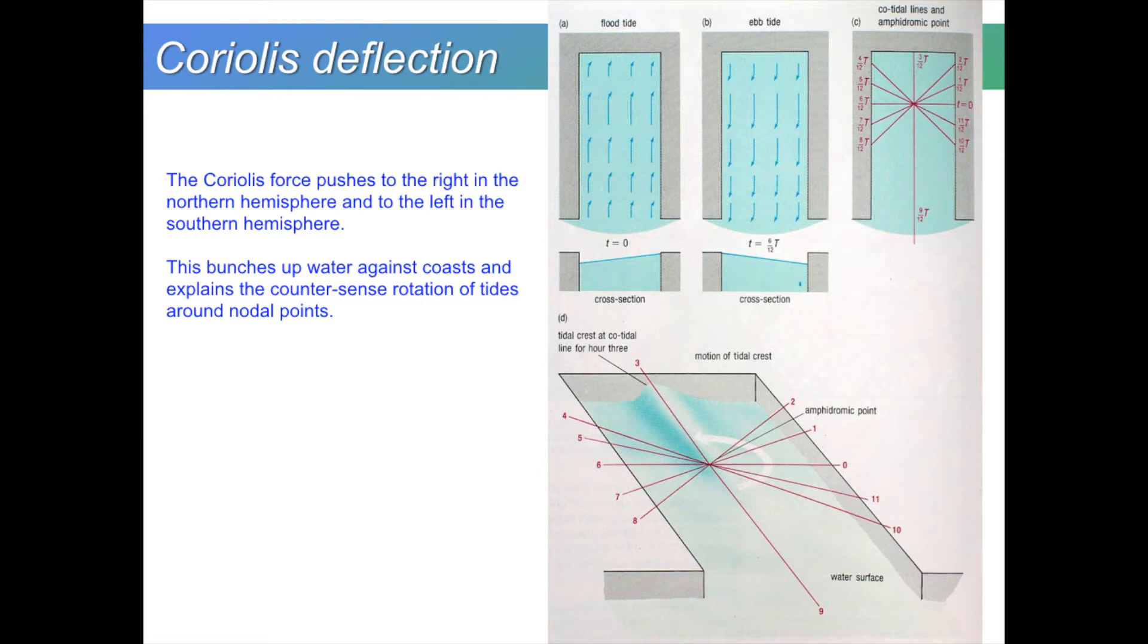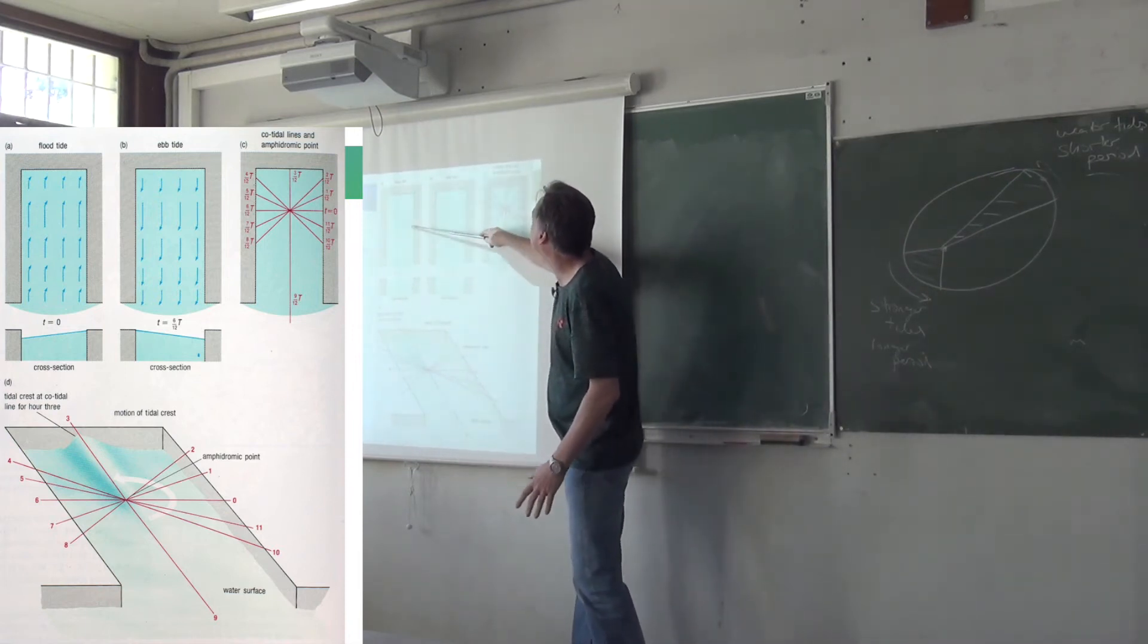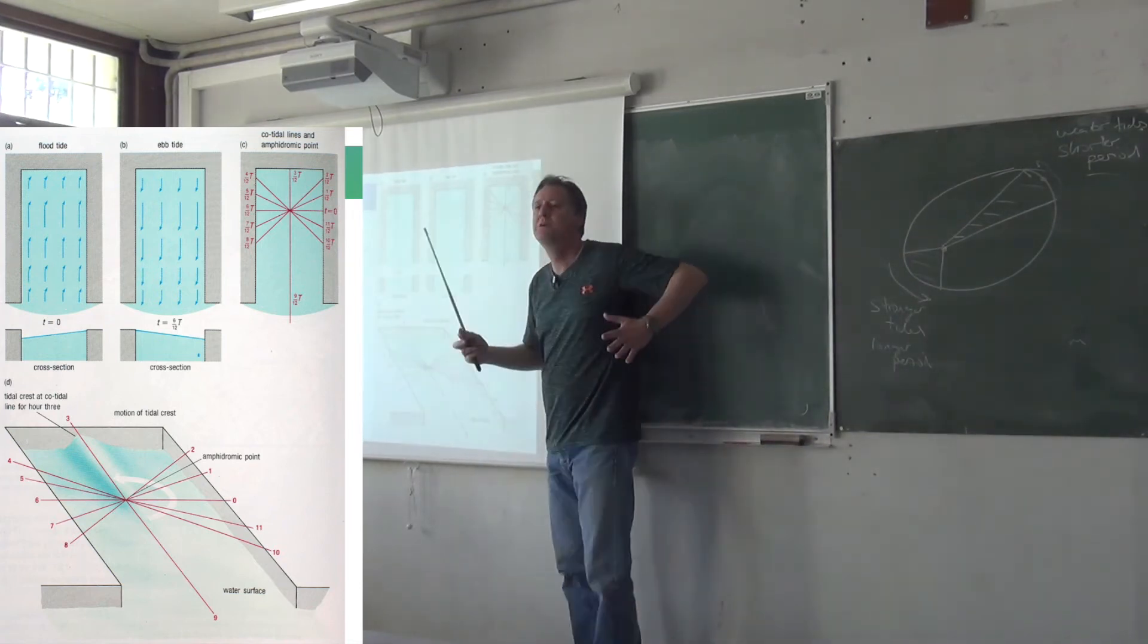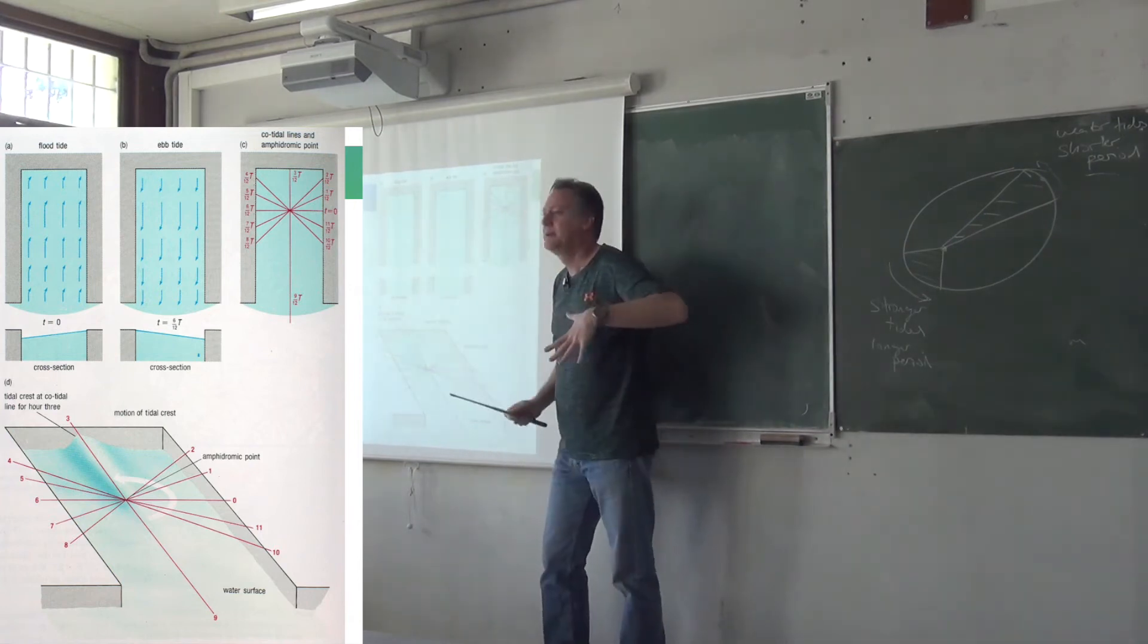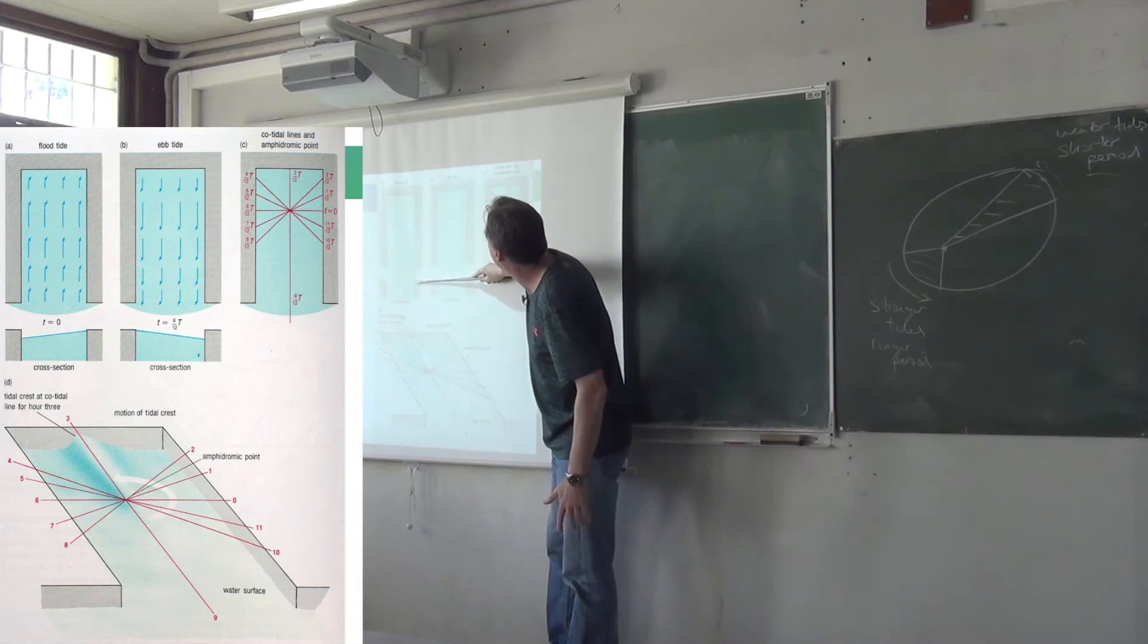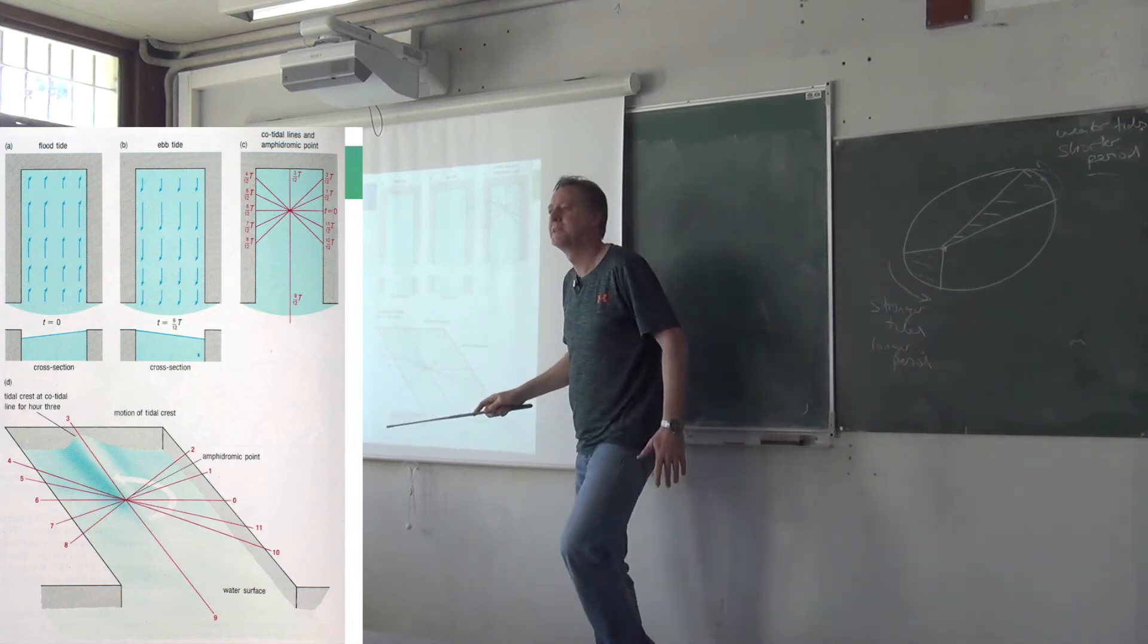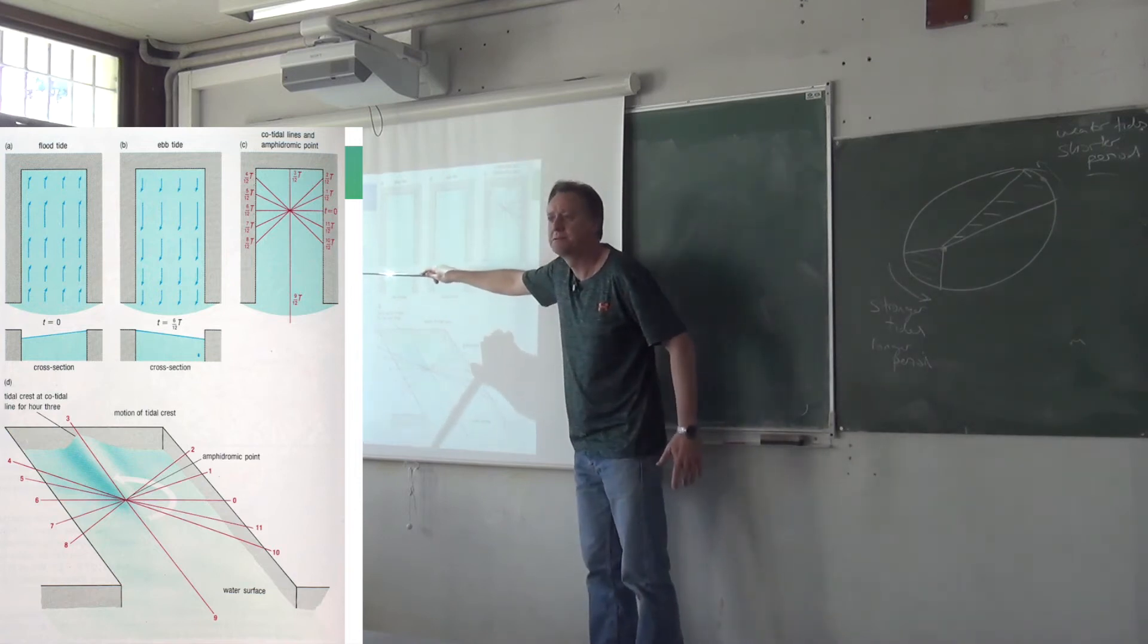So here's another way to explain why a Kelvin wave propagates in that way. Let's imagine that we're forcing the water into this closed basin here. So the water comes rushing in. And as it moves into the basin, because it's been attracted there by the moon, it experiences the Coriolis force, which pushes it to the right. So it piles up on the right-hand coast here. And then, six hours later, it gets pulled out again by the tidal attraction. And as it comes out, again, it's pushed to the right by the Coriolis force.